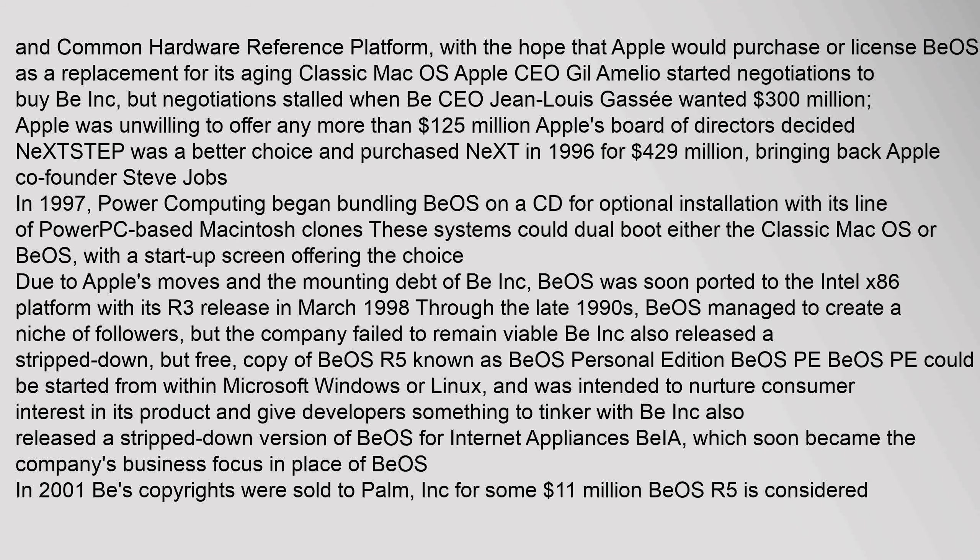Power Computing began bundling BeOS on a CD for optional installation with its line of PowerPC-based Macintosh clones. These systems could dual-boot either the classic Mac OS or BeOS, with a startup screen offering the choice. Due to Apple's moves and the mounting debt of Be Inc., BeOS was soon ported to the Intel x86 platform with its R3 release in March 1998. Through the late 1990s, BeOS managed to create a niche of followers, but the company failed to remain viable. Be Inc. also released a stripped-down but free copy of BeOS R5, known as BeOS Personal Edition (BeOS PE). BeOS PE could be started from within Microsoft Windows or Linux.